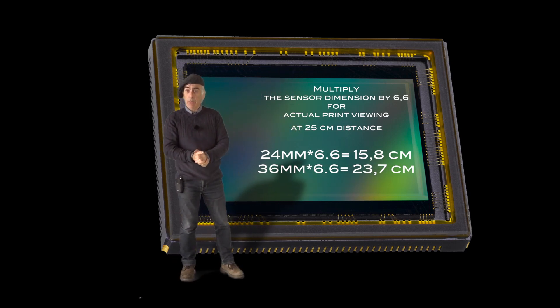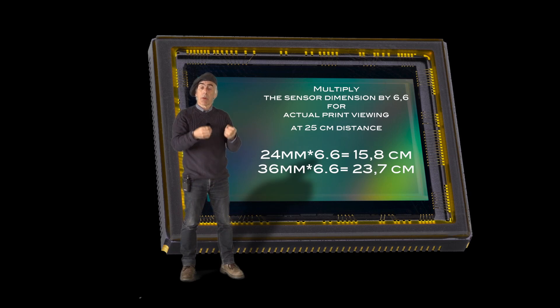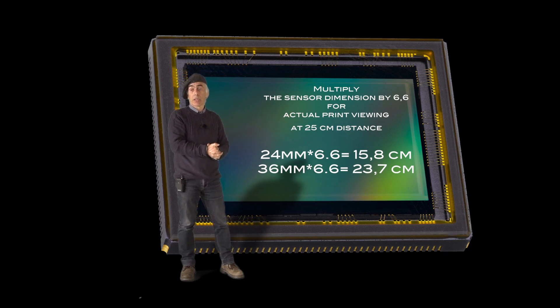And that will give us the maximum possible picture we should print to be viewed at 25 centimeters and still see the objects that are in the picture that have a circle of confusion, the maximum permissible circle of confusion of 30 micrometer. Everything outside that will be considered as blur or seen as blur.